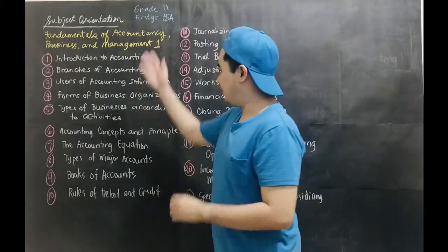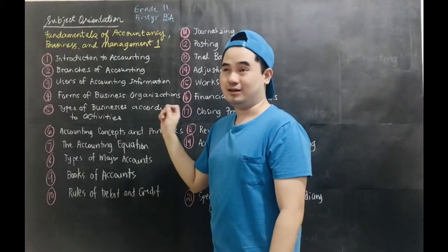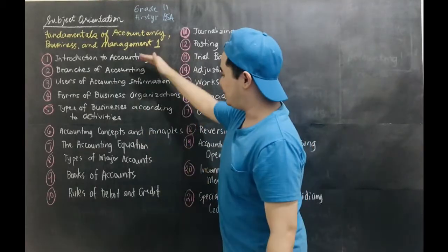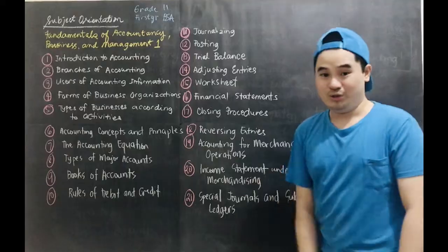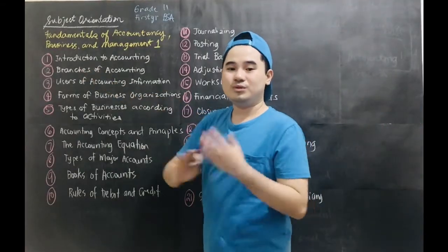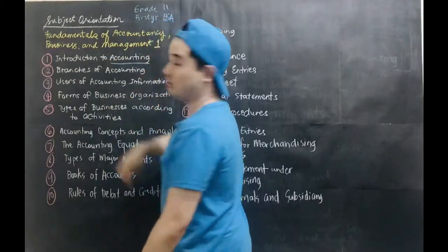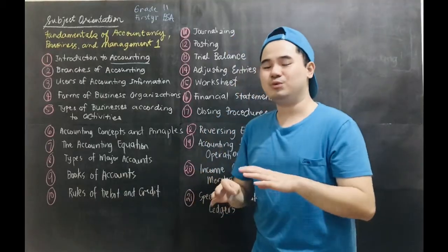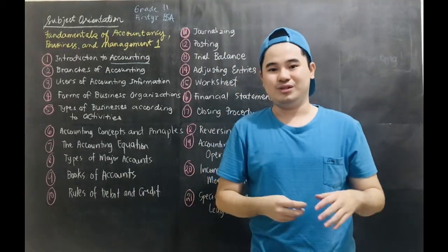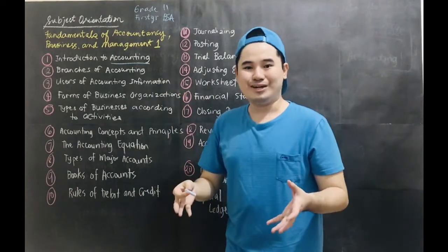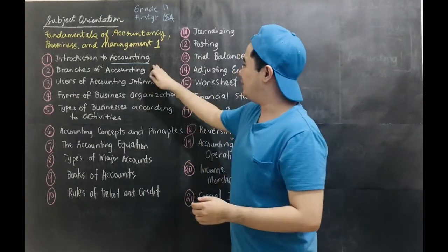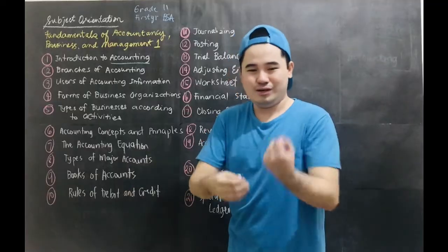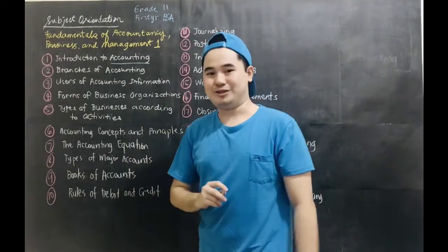This is our subject orientation for FABM 1. Allow me to give you the outline of the topics that we will be having for this specific subject. Our videos in this tutorial will be step-by-step from 1 up to 21. First thing that we will do is I will introduce to you what accounting is. So we will have the definition, what are the functions of accounting in business, we will also be talking about the history of accounting, and why do we do accounting in the first place. The first lesson will involve a very introductory theme lesson for accounting.